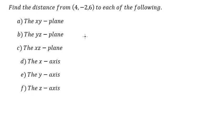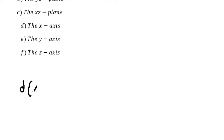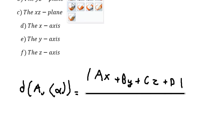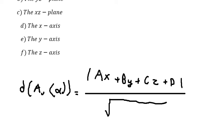Hello everybody. Today I want to show you how to find the distance. I will show you the technique. The first thing is about the formula — h is about the point alpha, and that is about the plane. So that should be about the absolute value. We have ax plus by plus cz plus d, over the square root. We need to use the coefficients of the plane, so we put them to the power of two.